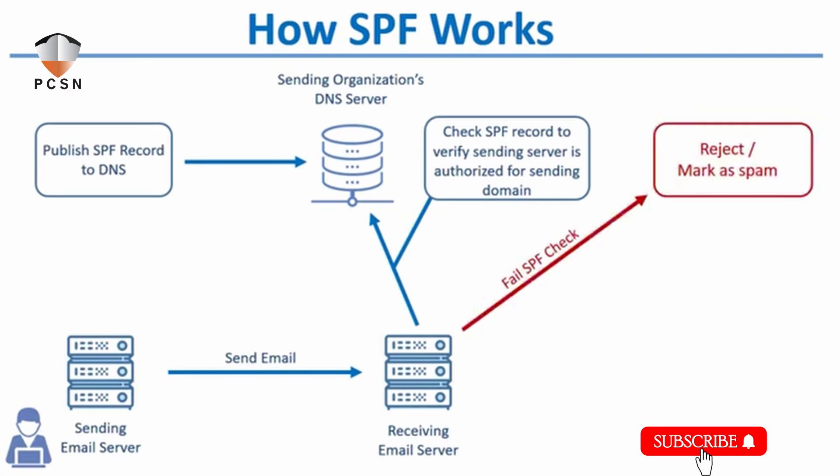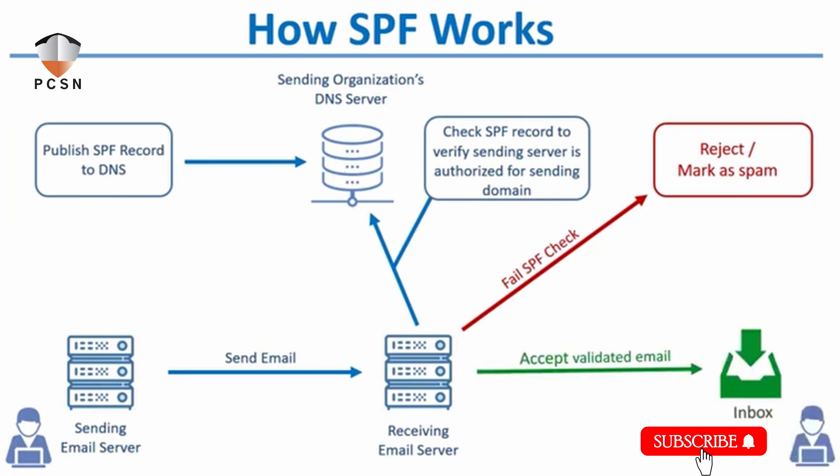If there's no SPF record, or if the SPF record specifies that the server the message came from was not authorized to send on behalf of that domain, then the message can be rejected or marked as spam. Or if it passes SPF validation, the message can be accepted for delivery by the receiving email server and placed into the recipient's mailbox.